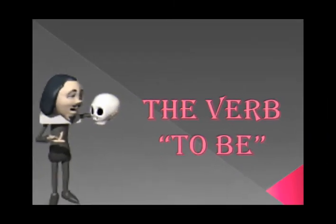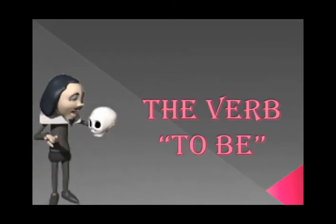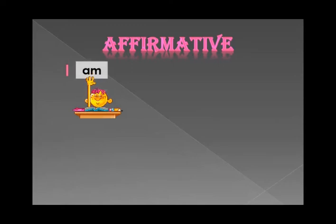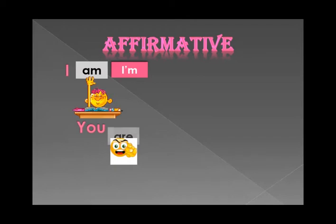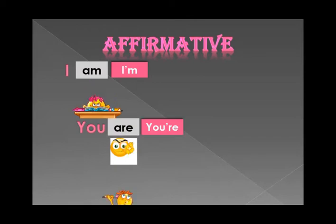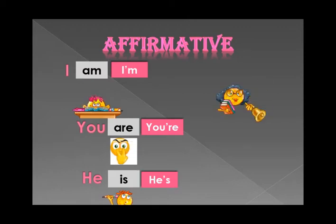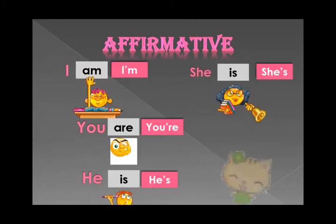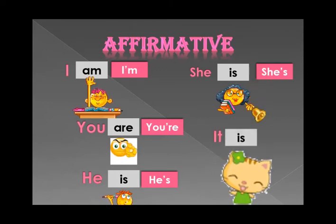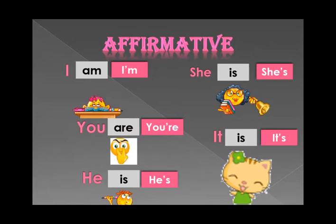Talk about the verb to be in present tense. Affirmative: I am, I'm, you are, you're, he is, he's, she is, she's, it is, it's. Affirmative.